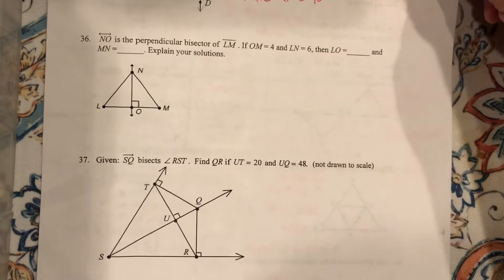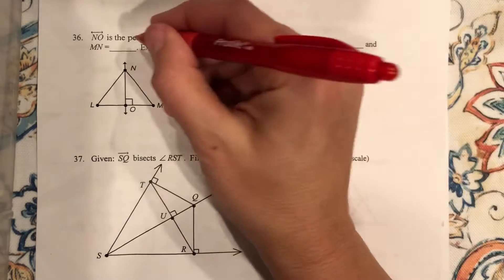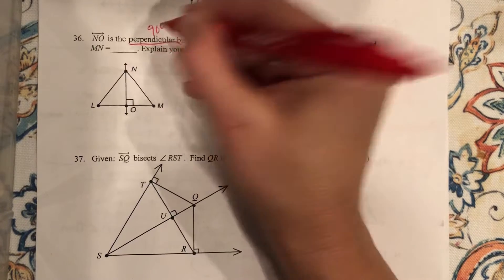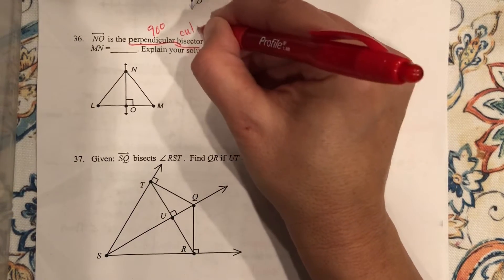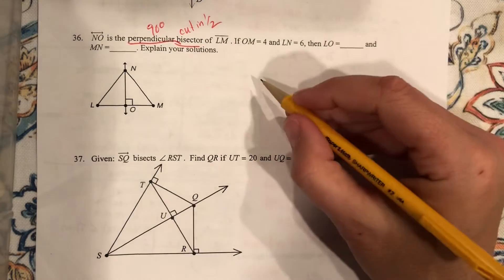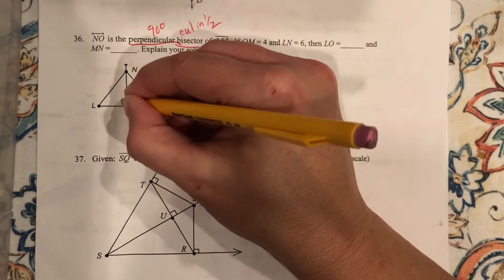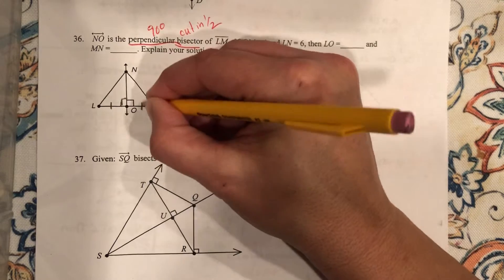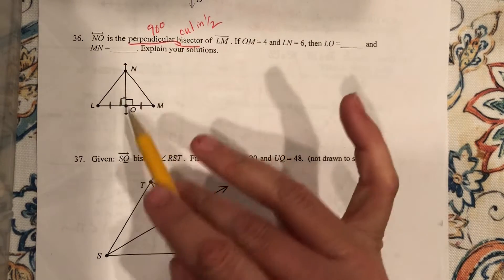Number 36, NO is the perpendicular bisector. Here we go again, 90-degree, cut in half, of LM. So I know I've got this, and I also know what? O is the midpoint because NO is the bisector.